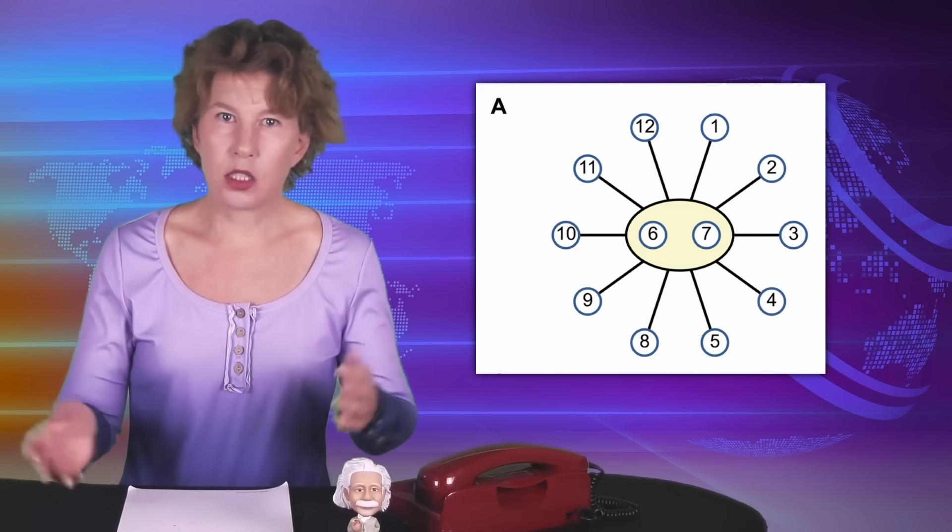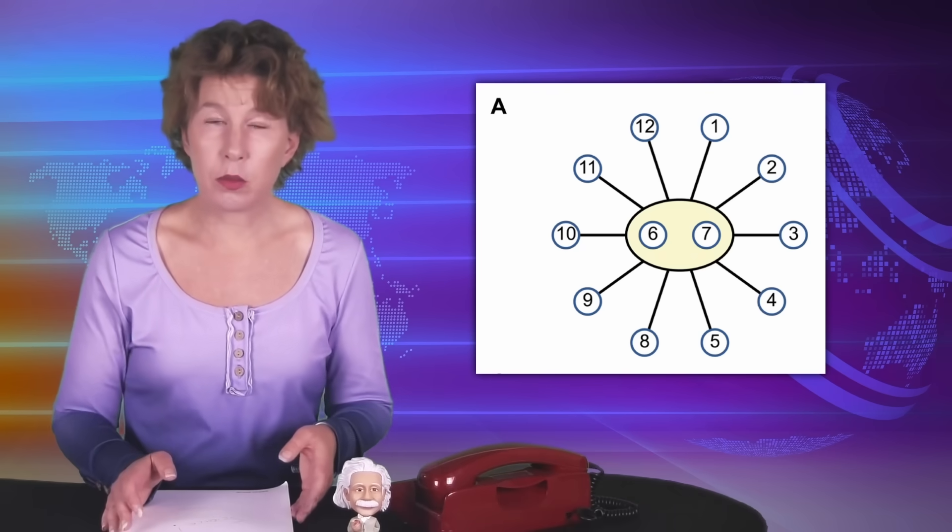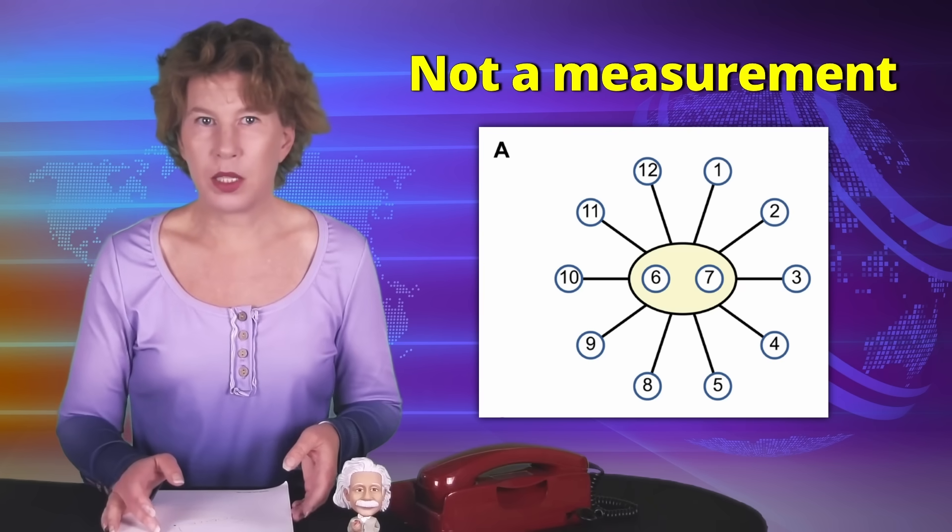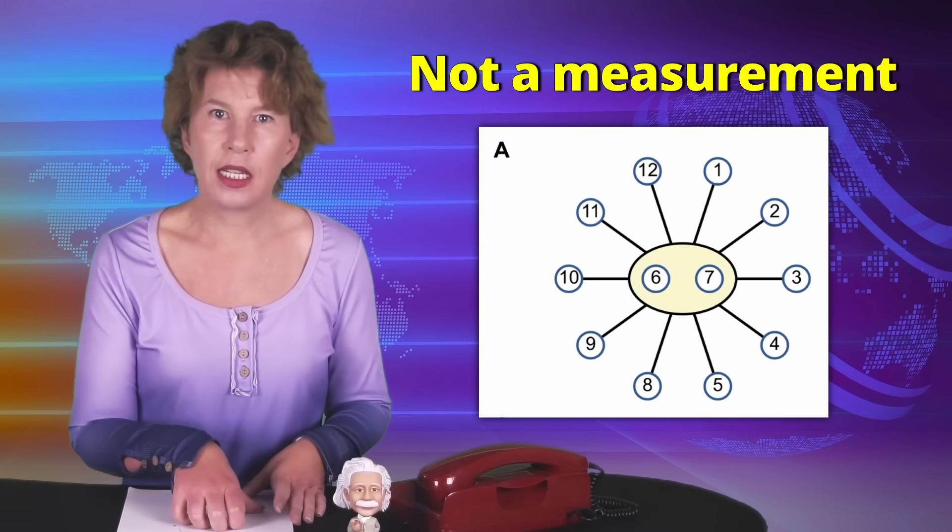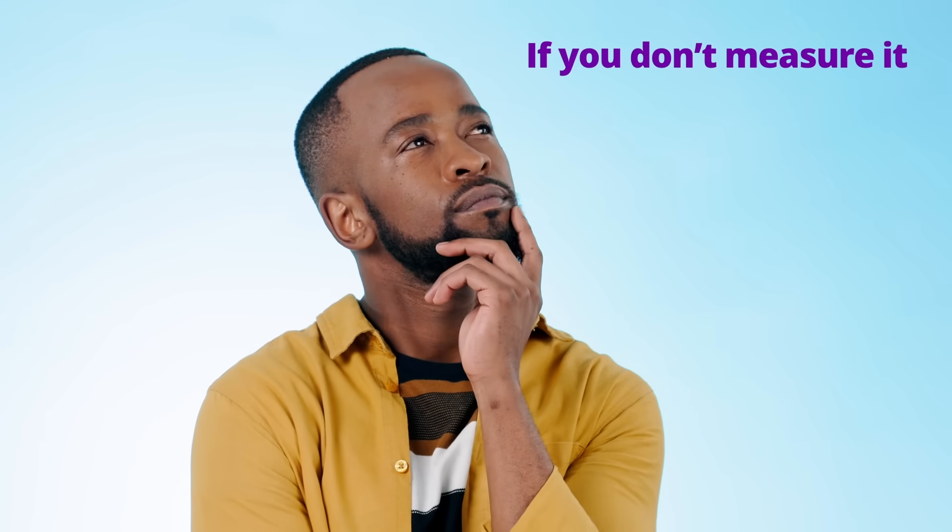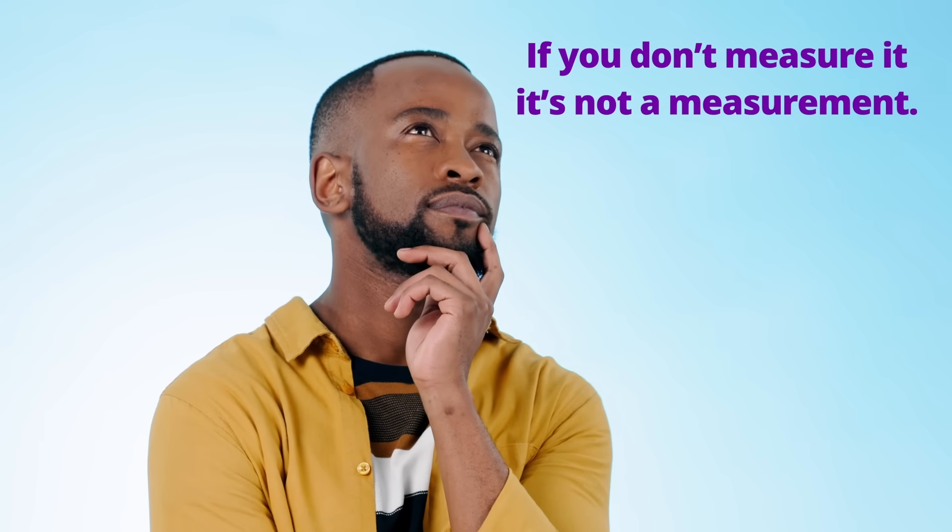That said, as you already noticed from my description of the experiment, the actual measurement wasn't done by the ten qubits acting on the two qubits. It was done when they read out the state of all the qubits. I don't know why physicists are so confused about this. If you didn't measure it, then it wasn't a measurement.